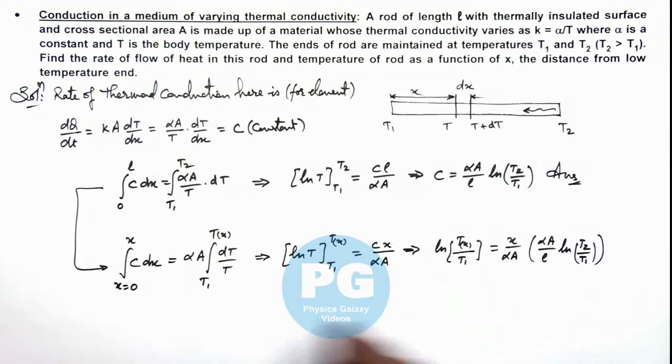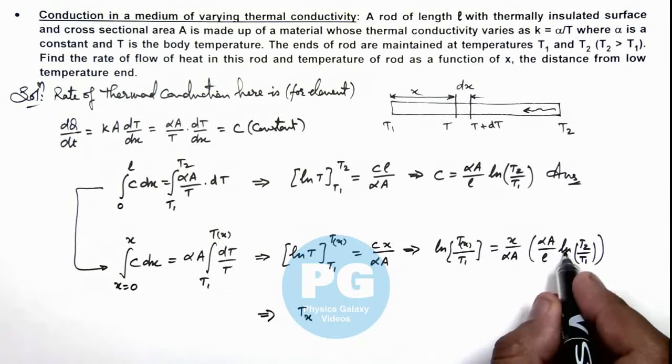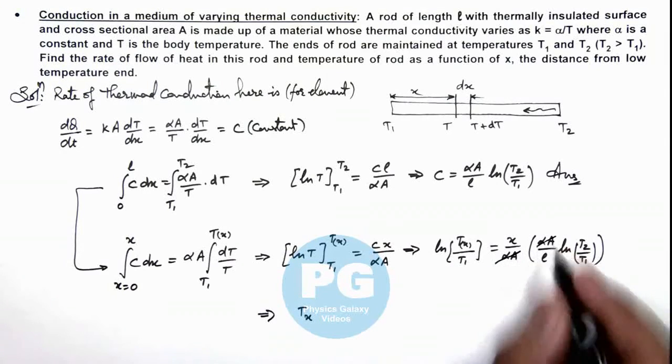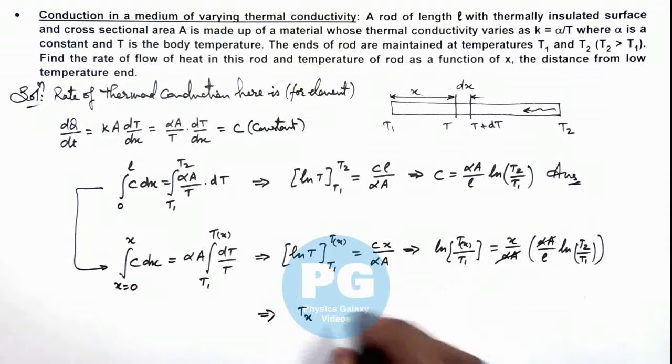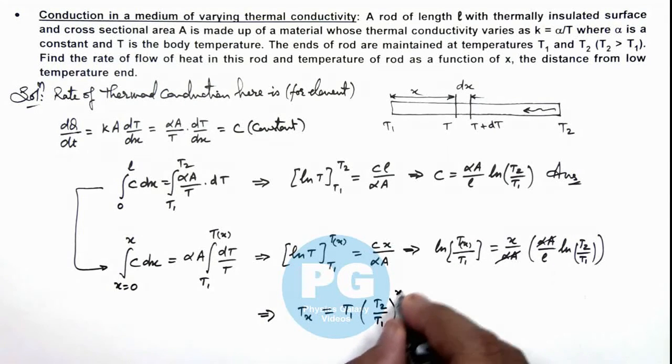From here you can directly get the value of Tx which we are required to find. And the value of Tx here is, this log on both sides can be eliminated as here αA gets cancelled out. So this Tx we are getting is equal to T1 multiplied by (T2/T1) to power x/L. That is the result of this problem.